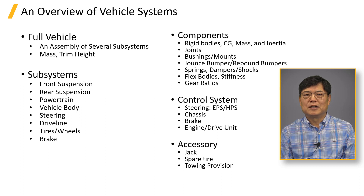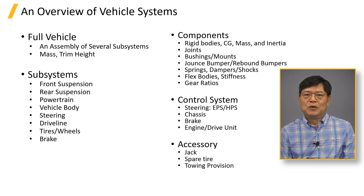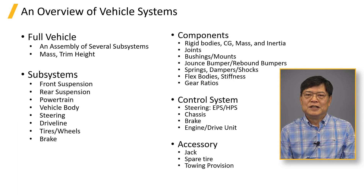Subsystems have many components of rigid bodies, joints, bushings, jounce and rebound bumpers, springs, dampers or shocks, flex bodies, and gears. More control subsystems are being incorporated into vehicle dynamics models. They are steering control, chassis control, brake control, and engine drive unit controls.